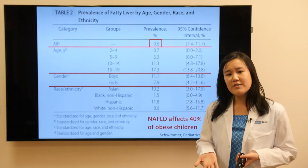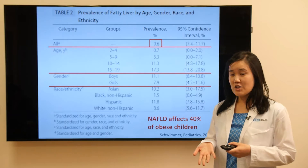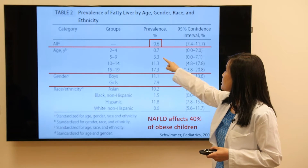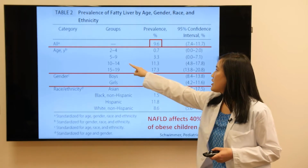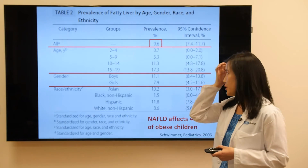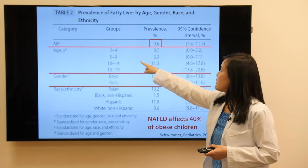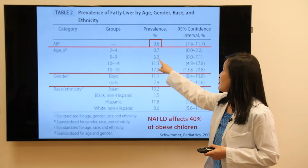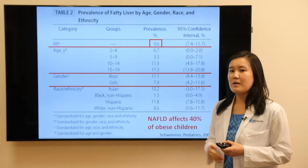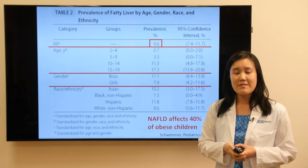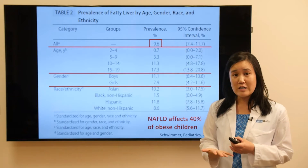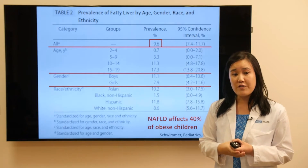The prevalence of fatty liver also varies with age. There is an increased prevalence starting at about the age 10 group. Ages 5 to 9 have a 3% prevalence, and ages 10 to 14 have an 11% prevalence. This is important because it guides us on when we start screening patients for fatty liver.